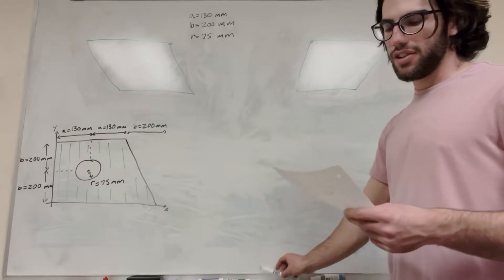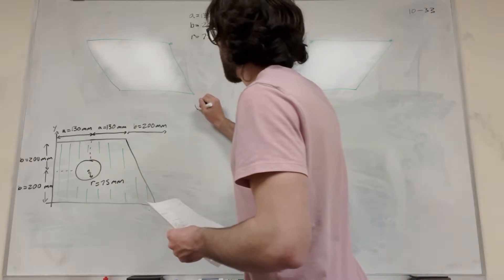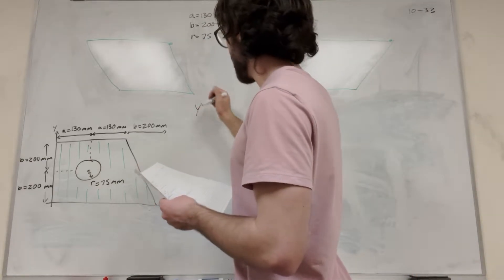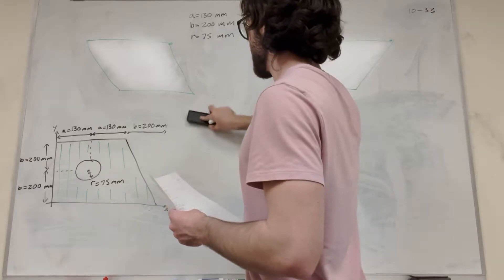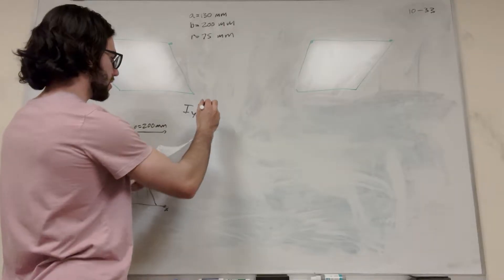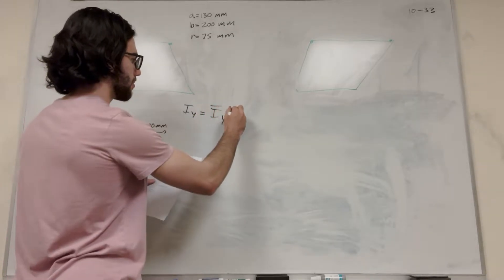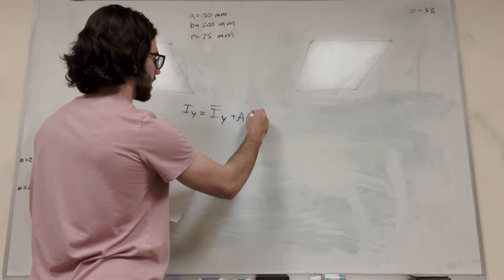If we're finding the moment of inertia around the y-axis, there's a formula we're going to use, and I'm going to write it down. Moment of inertia around the y, so I_y is equal to this given moment of inertia around the y, plus a distance in the x squared.